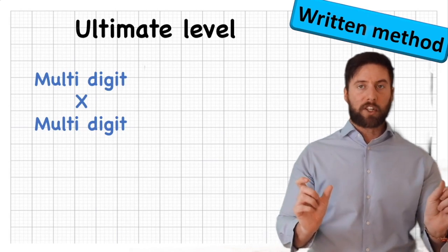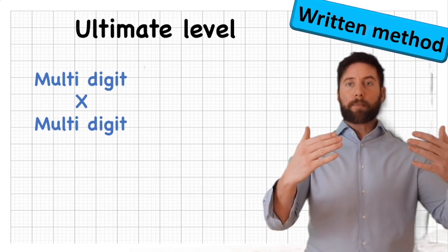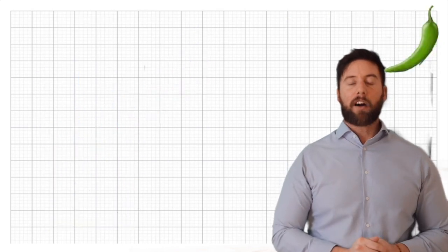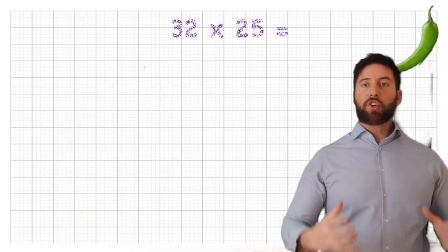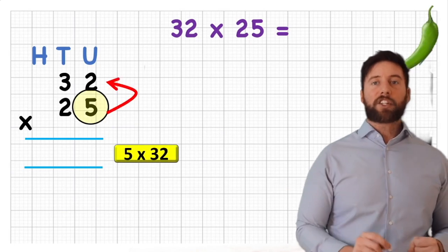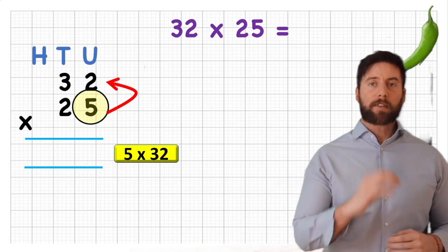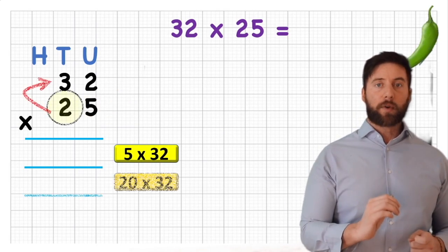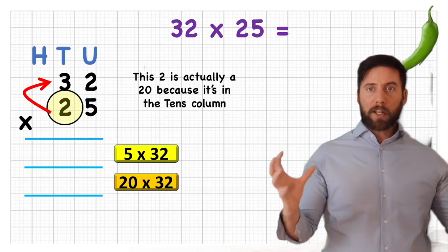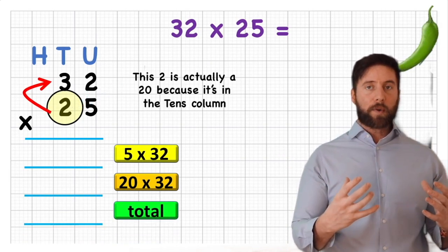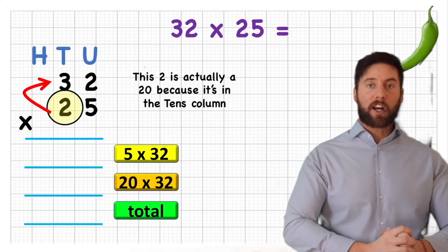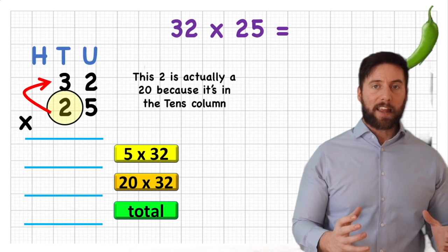Now we're at our ultimate step — adding a multi-digit to the second part, so it's going to be a multi-digit times a multi-digit. There is a little trick we need to learn and understand. Let's start with a green chili challenge: 32 times 25. Our first row is going to be the units digit, 5, times 32, so it's 5 times 32. Our second row is going to be 20 — which is what the 2 in the tens place represents — times 32. We add them together, so we're still partitioning but doing it more discreetly.